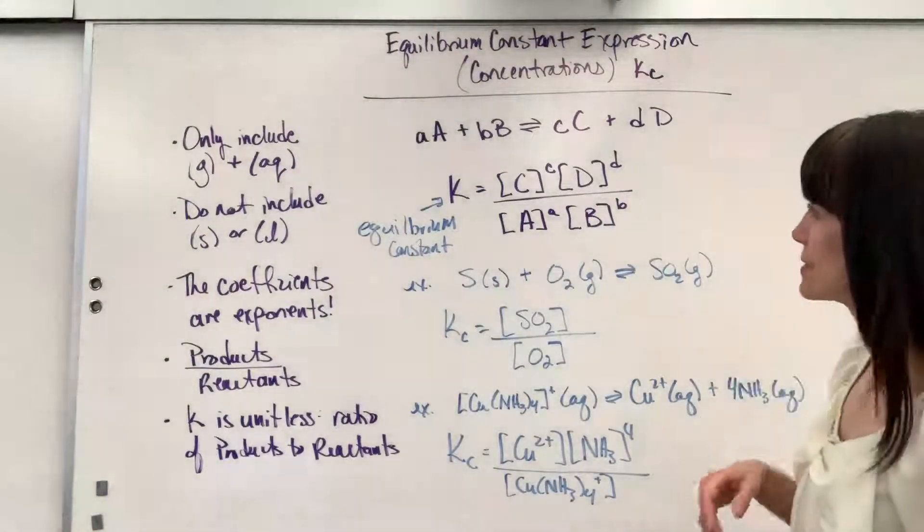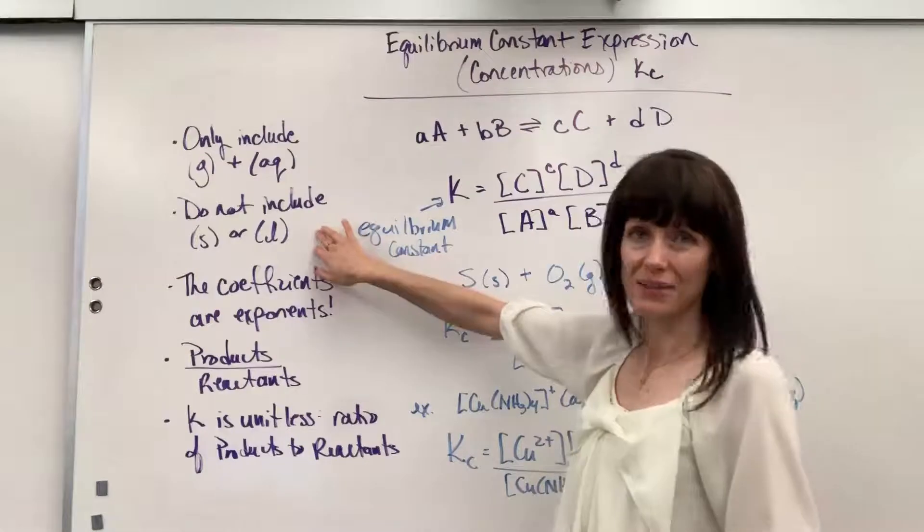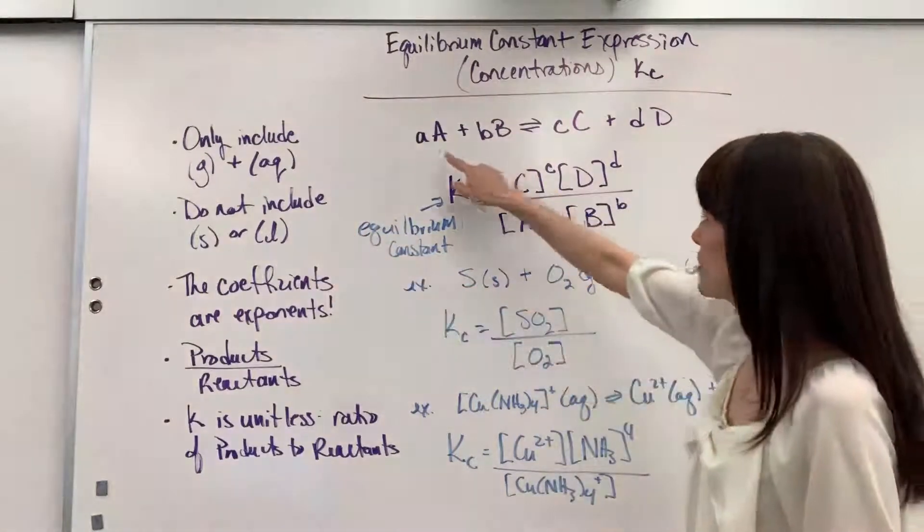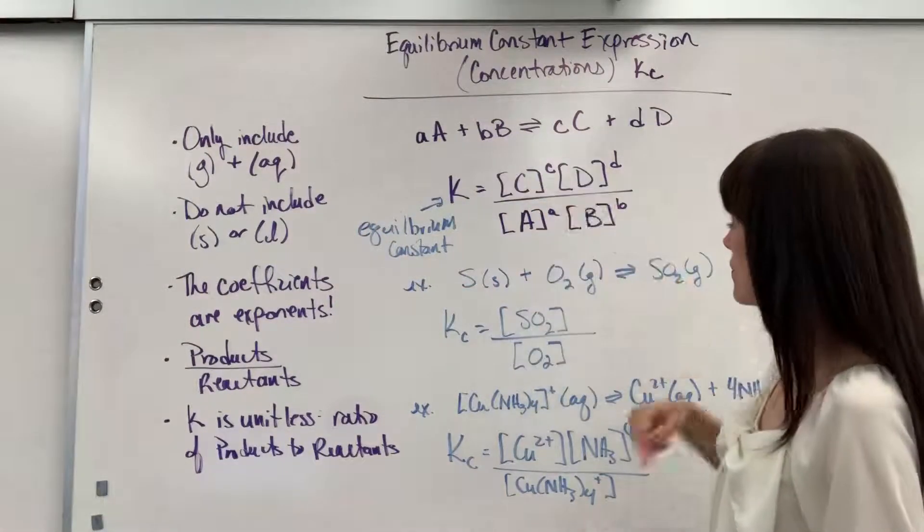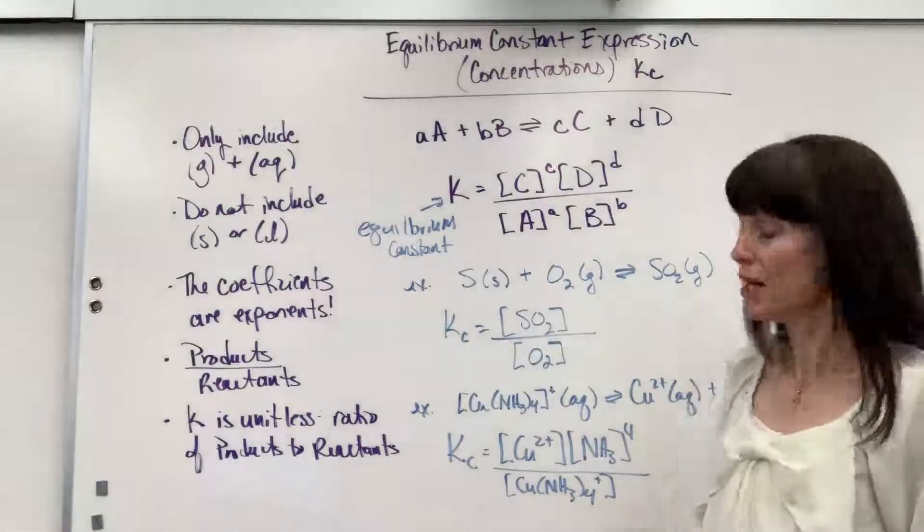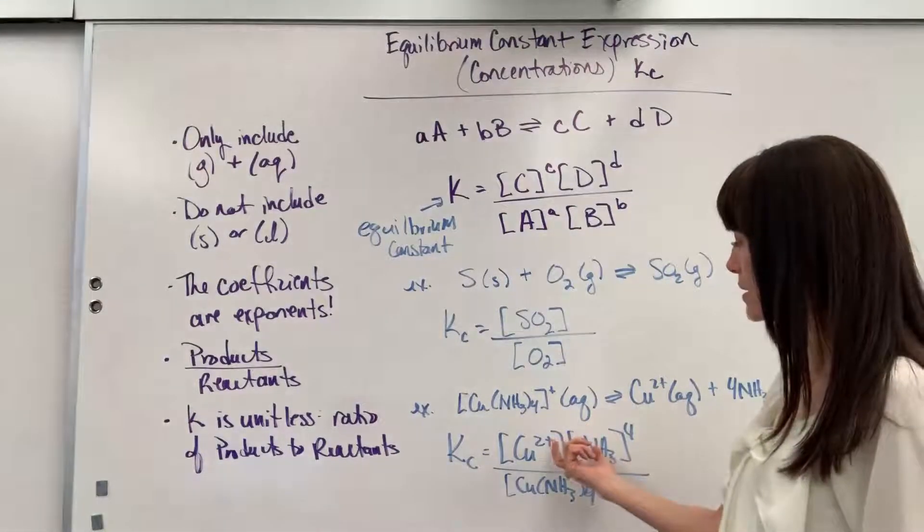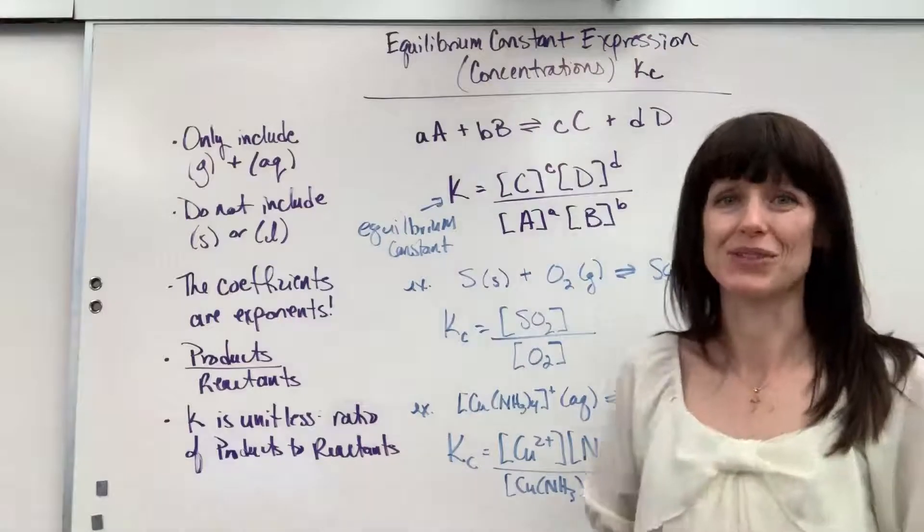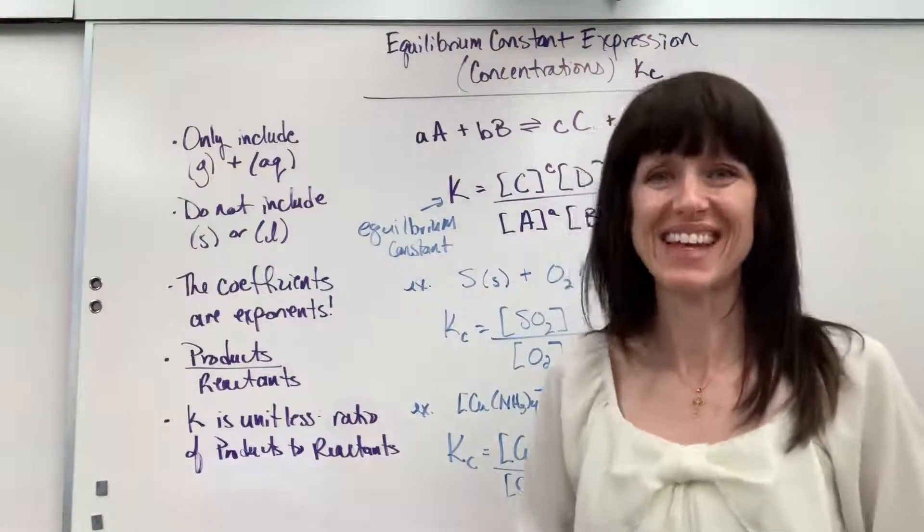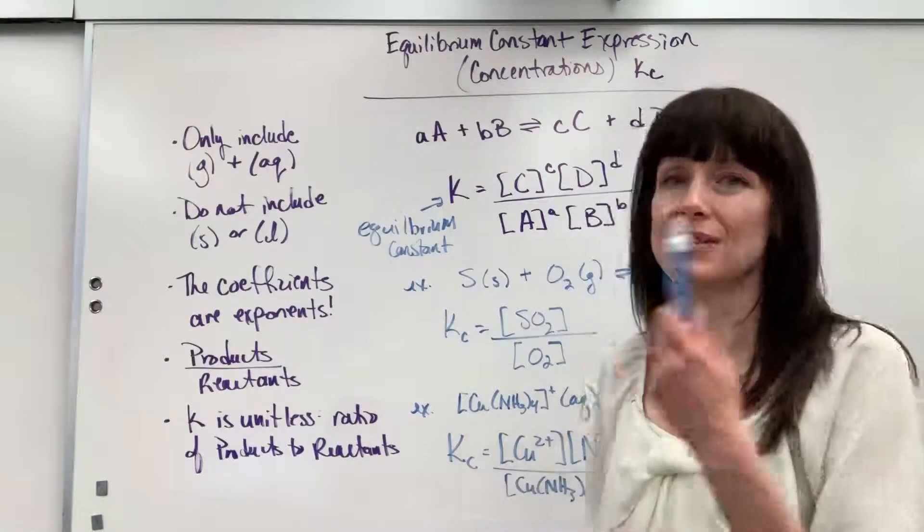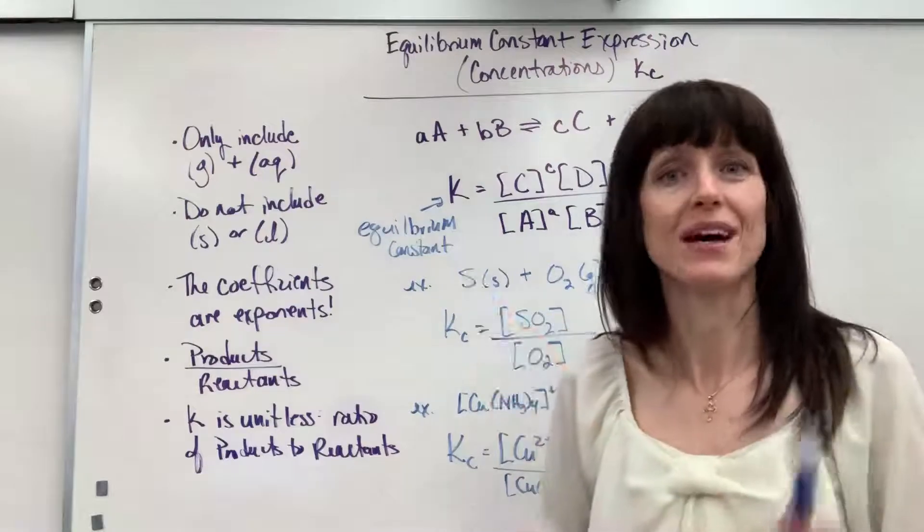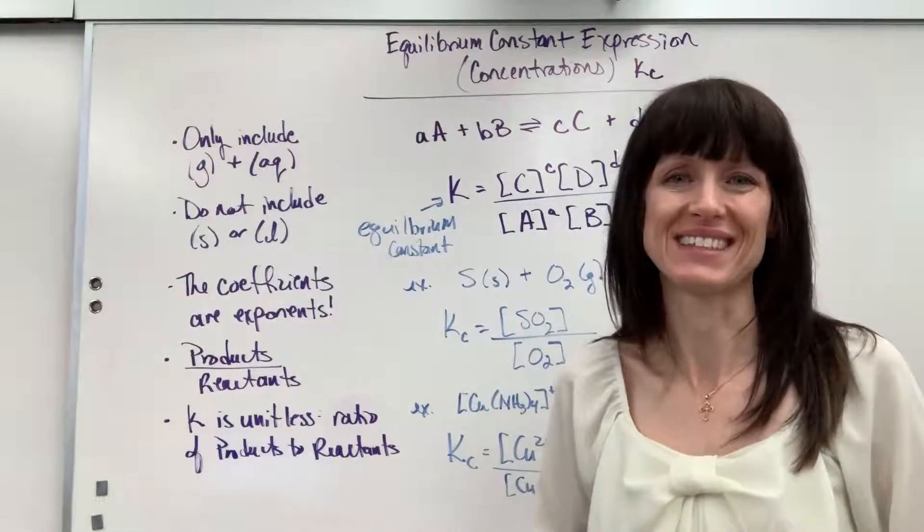Writing the equilibrium constant. Never write a solid or a liquid. And you simply take the number in front of that compound. And that becomes the exponent. Remember, when you have multiple reactants or products, you multiply those concentrations. Good work. Thanks. Lots more videos on equilibrium. Take a look at those under the equilibrium playlist.